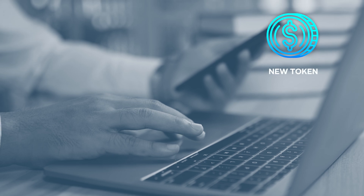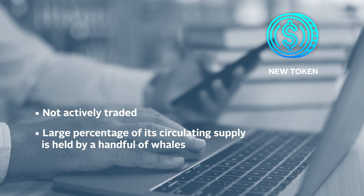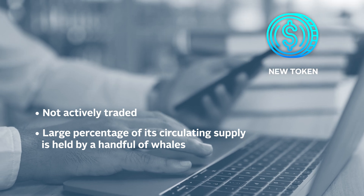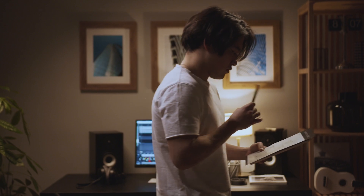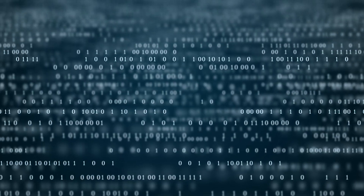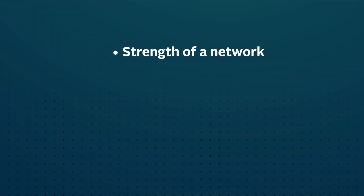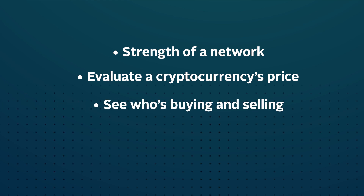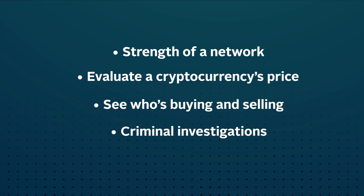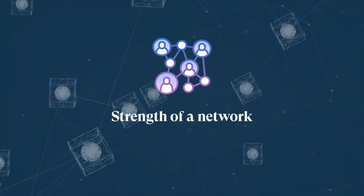Let's assume that you find out that the token isn't actively traded, or maybe a large percentage of its circulating supply is held by a handful of whales. These aspects might influence your decision. However, the use of on-chain analysis goes further than just making initial investment decisions. It can also be used to measure the strength of a network, evaluate a cryptocurrency's price, see who's buying and selling, or even aid in criminal investigations. Let's take a closer look at some of these uses, starting with using on-chain analysis to measure the strength of a network.